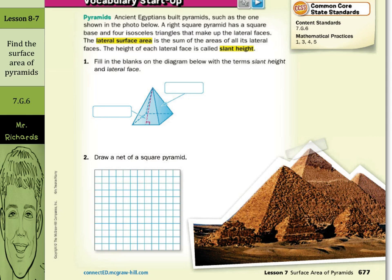Fill in the blanks in the diagram below with the terms slant height and lateral face. The slant height is this height coming down from the top to the bottom of the base, so that's going to be our slant height. And our lateral face indicates one of these sides here — that's just one of the lateral faces. So: lateral face.